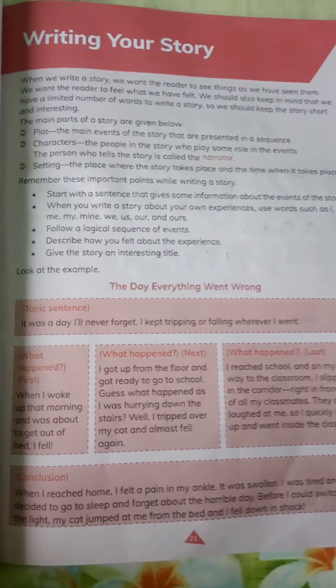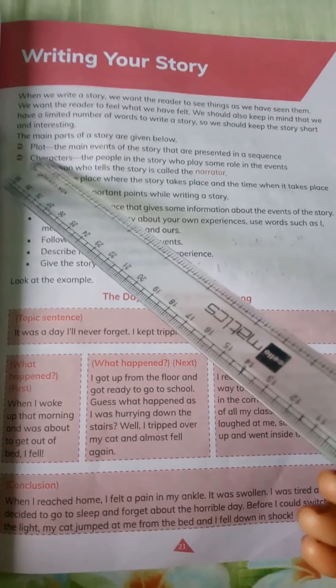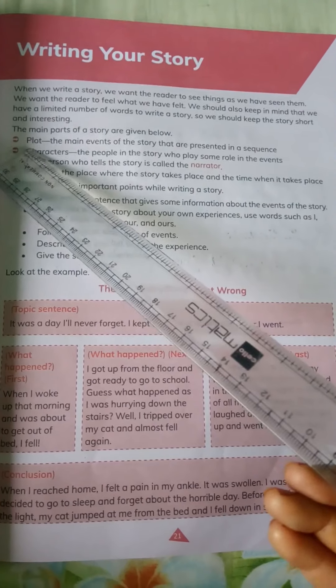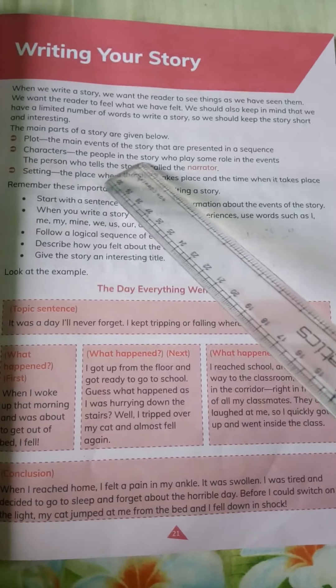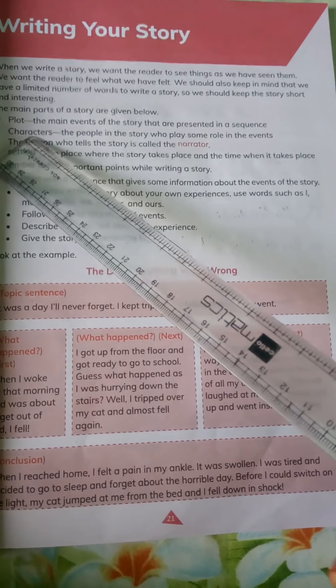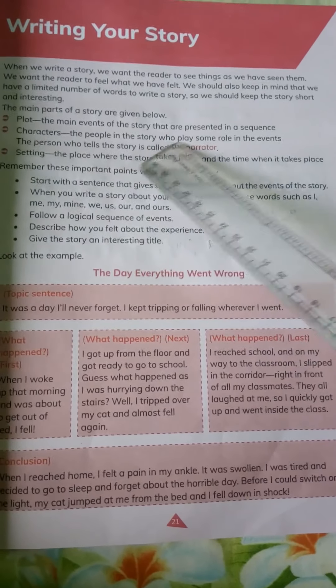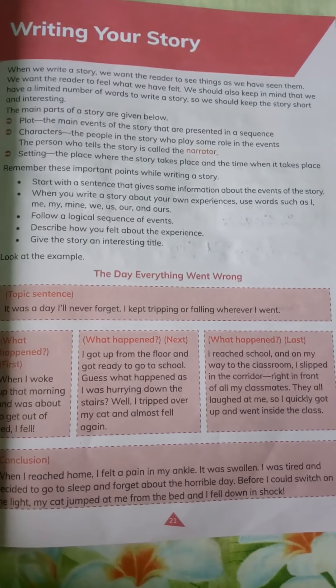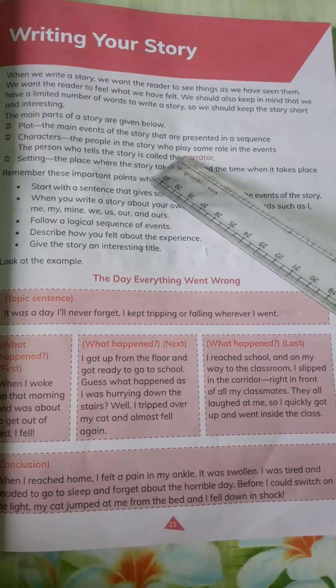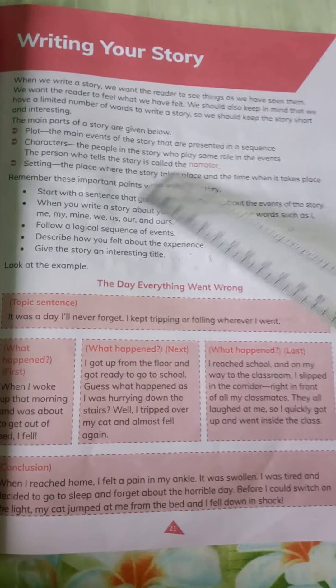The main parts of a story are given below. Number one is plot — the main events of the story presented in a sequence. Number two is character — the people in the story who play some role in an event. The person who tells the story is called the narrator. Characters in this chapter include the three billy goats and a troll.